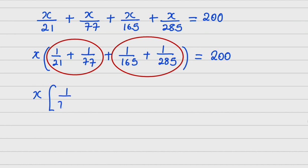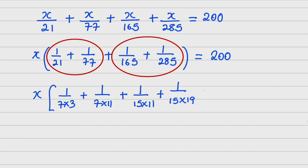Now, 1/21 can be written as 1/(7×3), plus 1/(7×11), plus 1/(11×15) — because 165 = 15×11. And by the same pattern, the next term can be written as 1/(15×19). So now I have x times all of these equals 200.